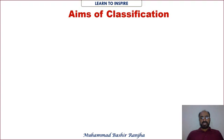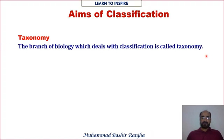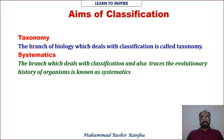Next are the aims of classification. There are two important terms: taxonomy and systematics. Taxonomy — which we studied in Chapter 1 — is the branch of biology that deals with the classification of organisms on the basis of similarities and differences, and also deals with the scientific naming of organisms.